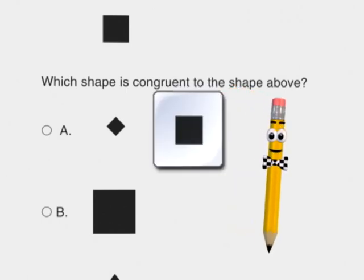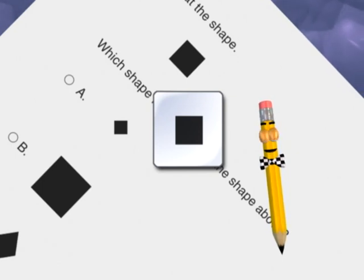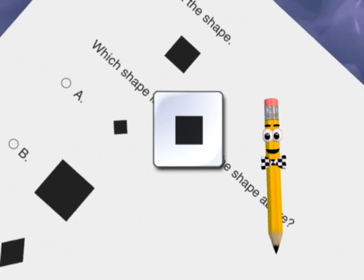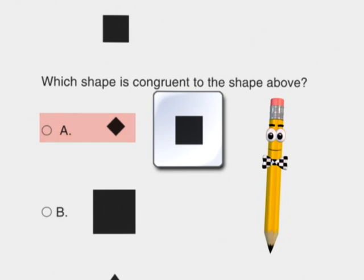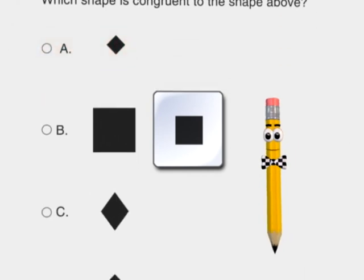Look at shape A. We can turn the page to see that it is a square, but it is too small. Shape B is a square, but it is too large.